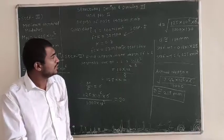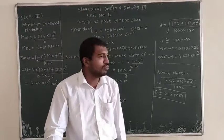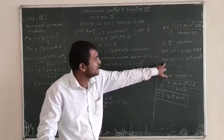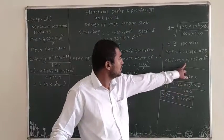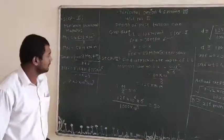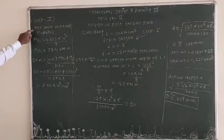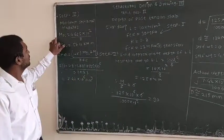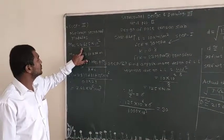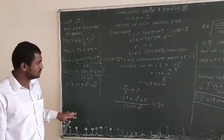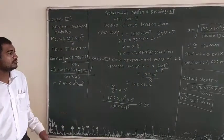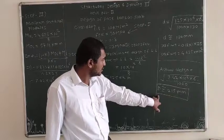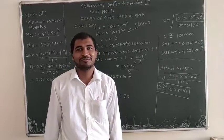The self-weight formula is 0.18 × 1 × 25, giving 4.625 kN/m². Step 3 is the minimum sectional modulus. The dead load moment uses the formula W × L² / 8 with W = 4.625. The actual depth capital D is approximately equal to 215 mm. The next session will continue. Thank you.